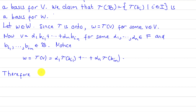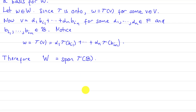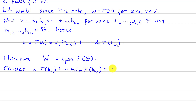This shows that w is a linear combination of finitely many elements in tau(B). Therefore tau(B) spans W, i.e., W equals span of tau(B). Now we're going to show the linear independence of tau(B). Consider a finite linear combination of elements in tau(B) that equals zero.